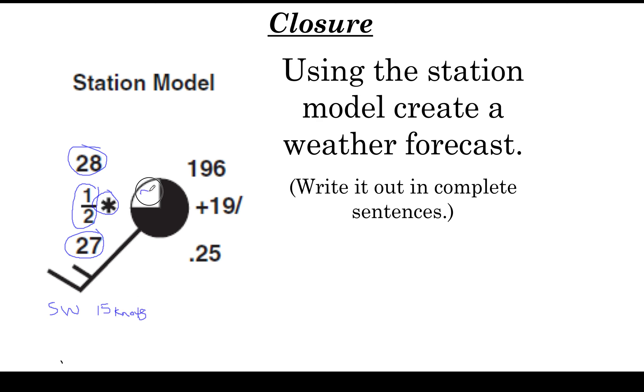Cloud coverage is 75 percent. Barometric pressure we see 196. Now we have to think back—well, this is not in millibars, this is just a simple station model, so we have to add a 9 or a 10. This is less than 500, which means we add a 10 in front. So I would put a 10 in front here and I would move the decimal one place, so the air pressure is actually 1019.6 millibars. That's a pretty high air pressure.